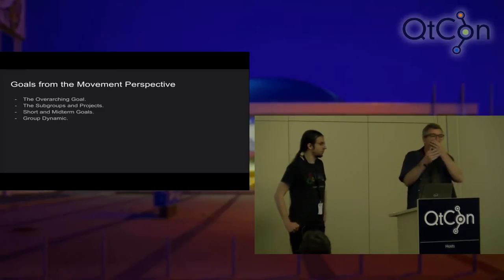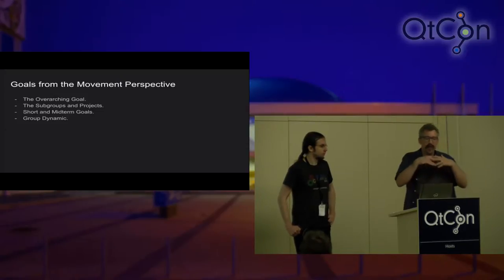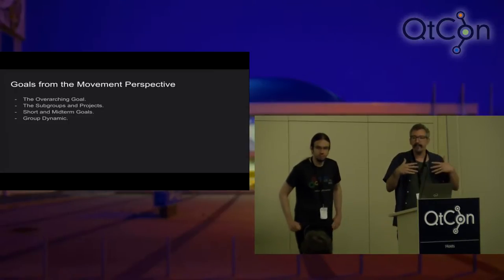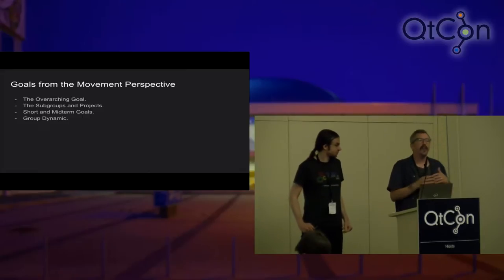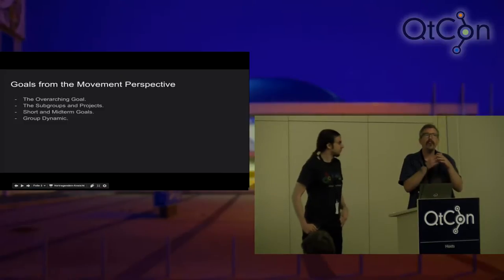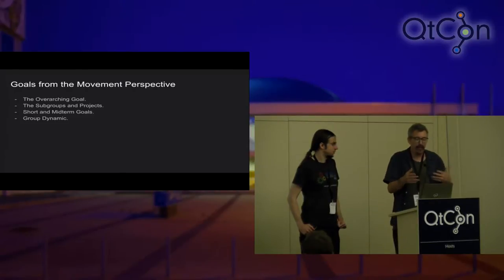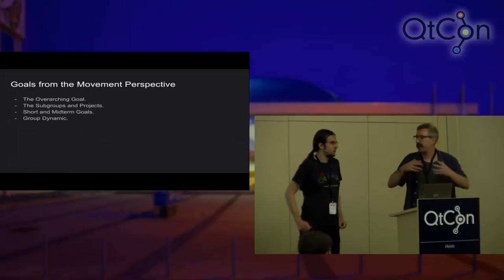You take this overarching goal — let's say Free Software Foundation wants to create open source — and within that movement you create subgroups and projects that push the goal forward. You have short and midterm goals to define how well you're moving toward the grander goal. You're not expecting to reach it; you're more or less expecting to go towards it. One of the focuses is also group dynamics: instead of asking how well did we do this product, you ask how well did the group perform, how well did we move towards this goal, how many people noticed? There is a very clear difference in focus between product and movement.